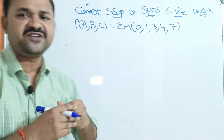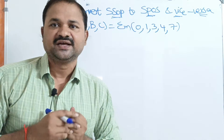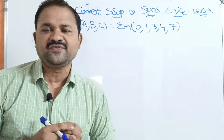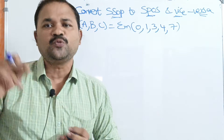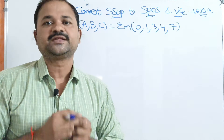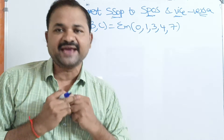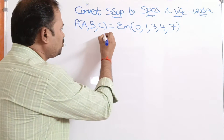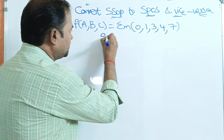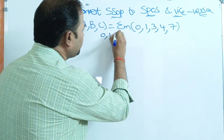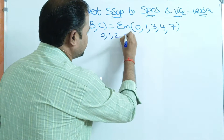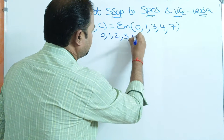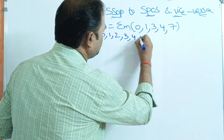Here, if we have 3 variables, then totally we will have 2 power 3 — that is nothing but 8 minterms from 0 to 7. So we will have 8 minterms from 0 to 7.